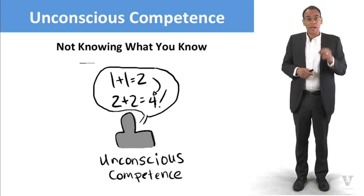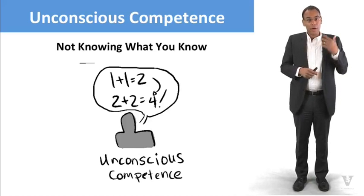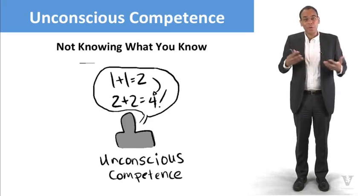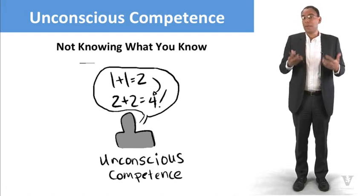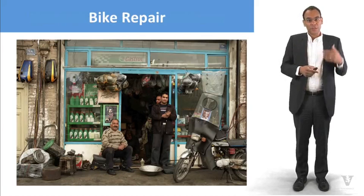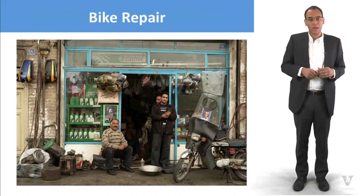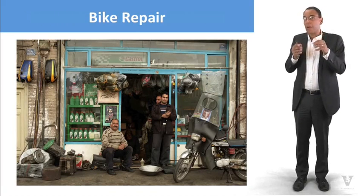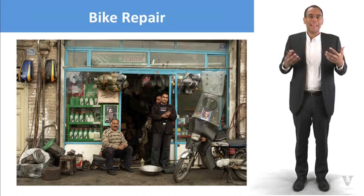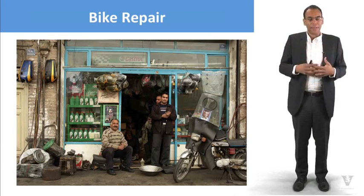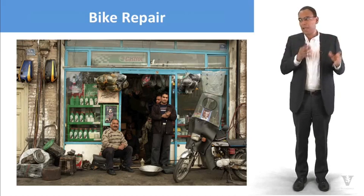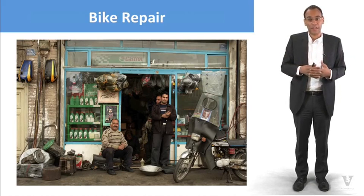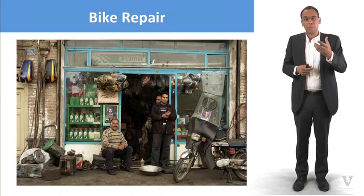Then we have the problem of unconscious competence, where we don't know what we know. We know what to do, we're able to get stuff done, but we're maybe not really sure why. There's a great book called Shop Class as Soulcraft by Matt Crawford. Matt Crawford worked in a think tank, was your normal white collar intellectual. He threw it all away and became a motorcycle mechanic, began to work on antique and vintage motorcycles.